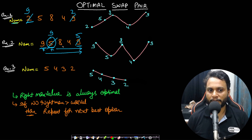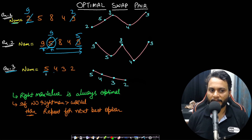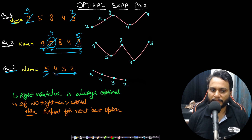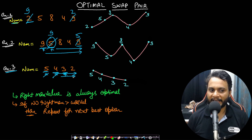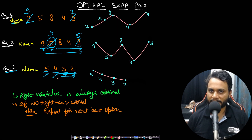For the third example, number 5432: we try to find a number larger than 5 on the right-hand side — there is none. The second best option is 4 — again no larger value to the right. Similarly for 3. In this case we cannot perform any beneficial swap; the number is already the largest possible. So we return the same number as the answer.